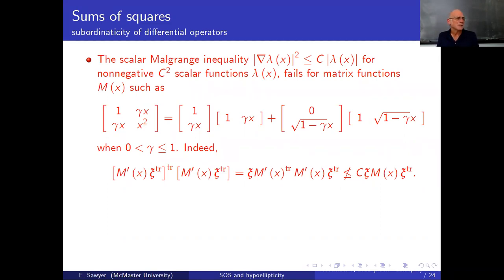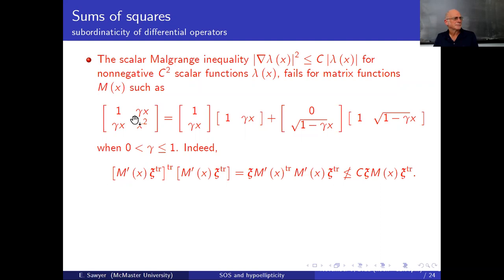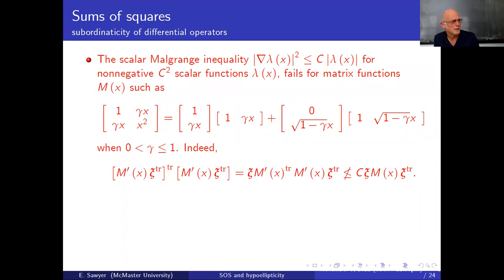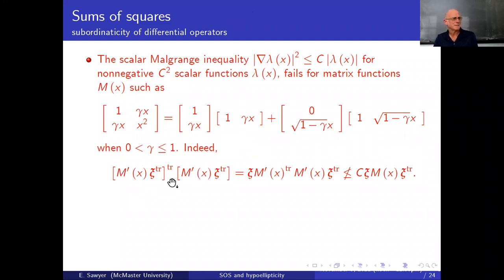However, this fails for matrix functions. For example, the simplest possible functions you can imagine — I'll give an example here. This matrix is a sum of squares, as indicated. What I mean by a sum of squares for a matrix is a sum of outer products of vectors, as opposed to inner products. And the fact that it fails the Malgrange inequality is written down here.